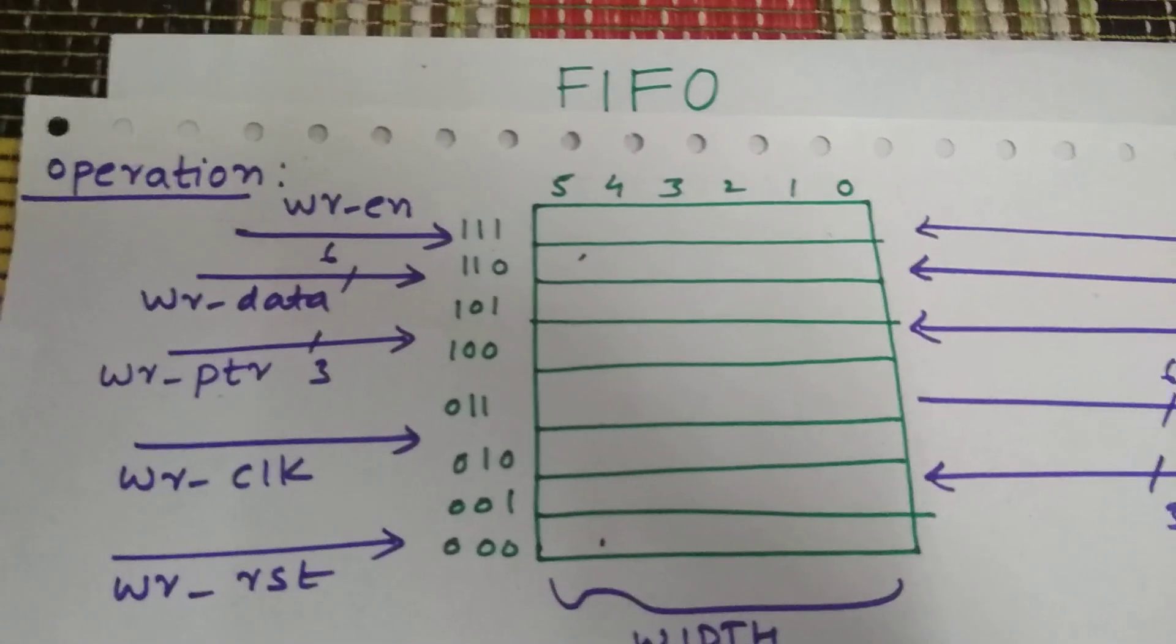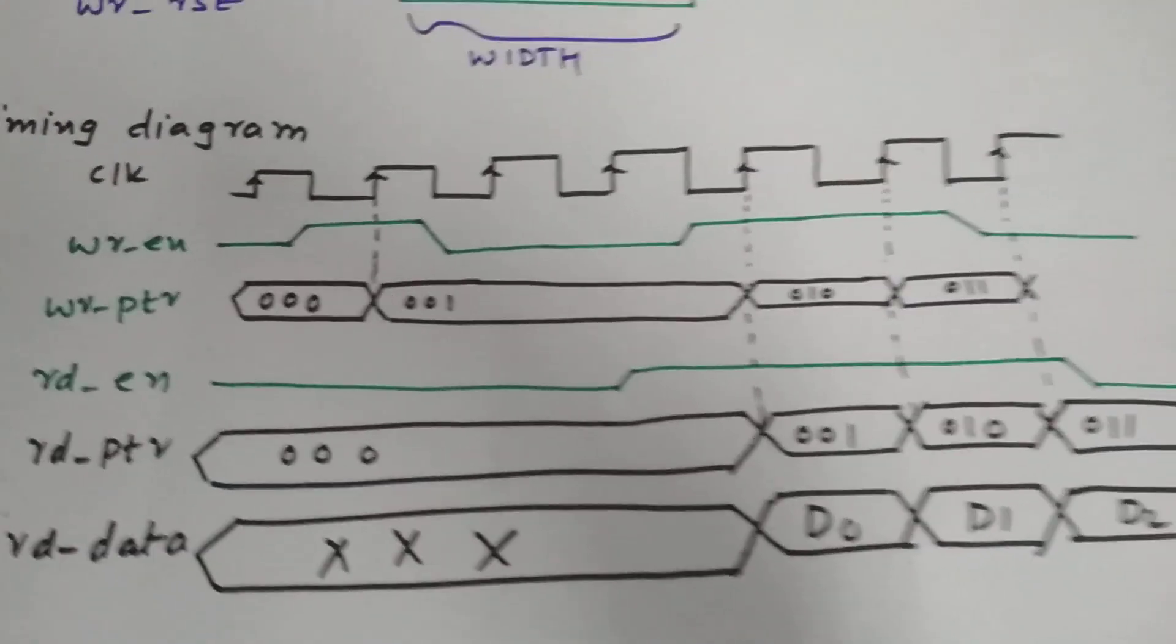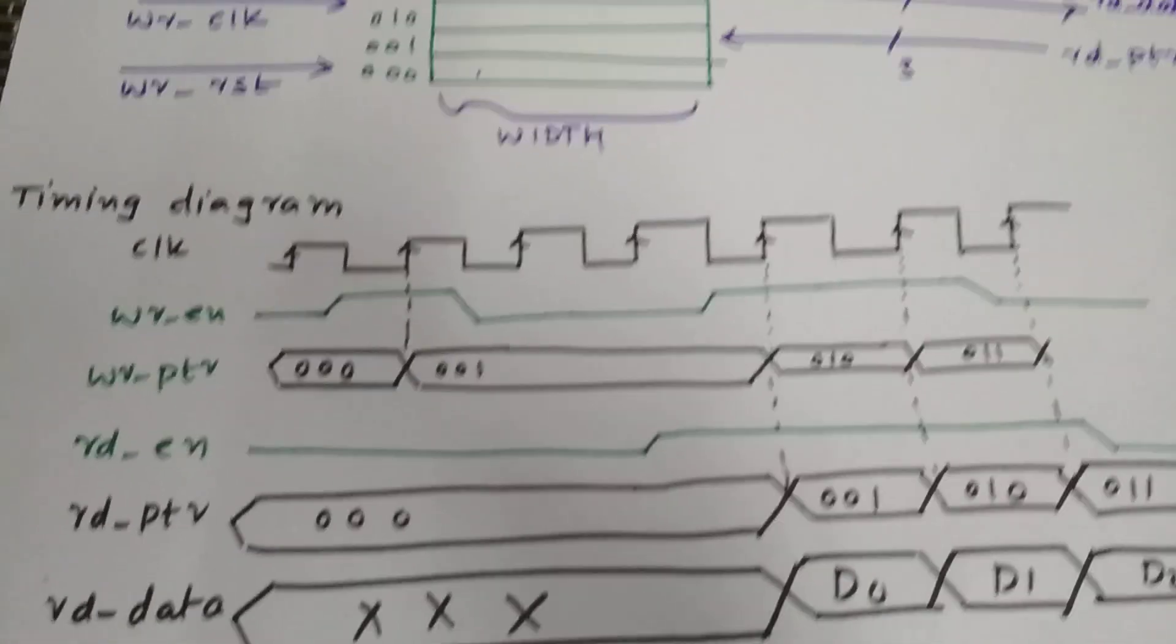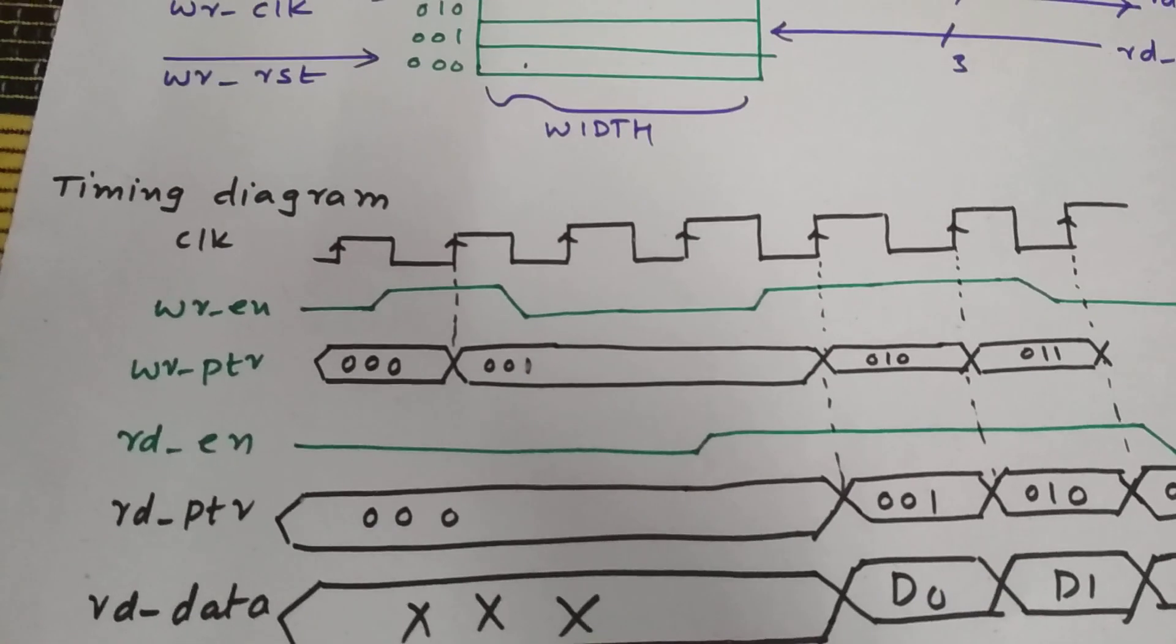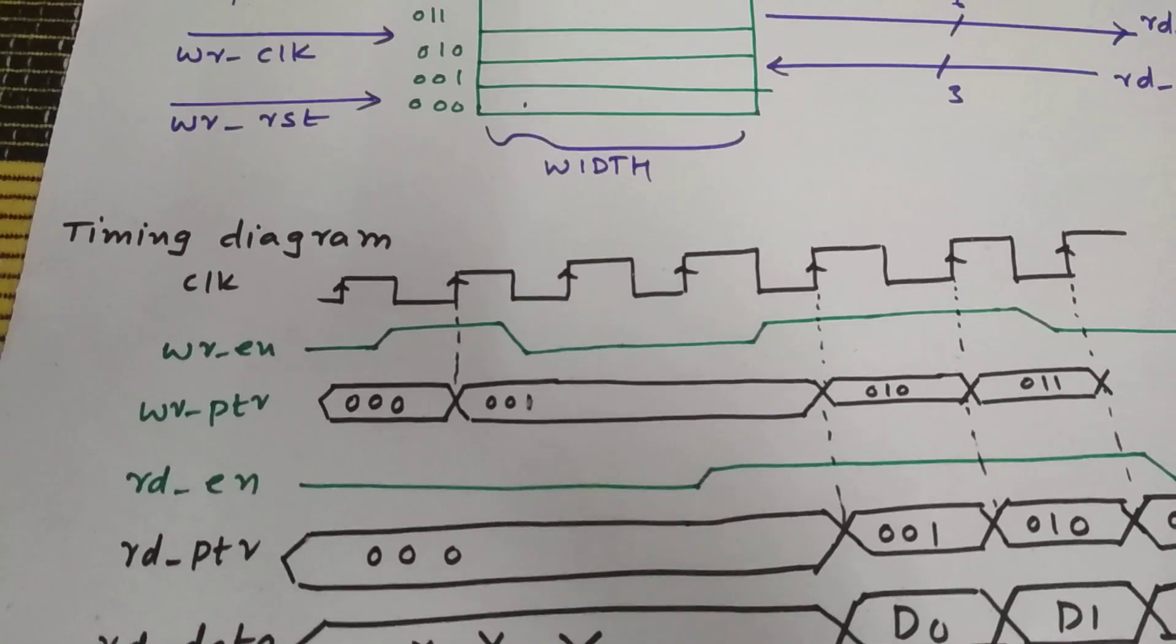So for better understanding of a FIFO, I'm going to deal with the timing diagram, how the clocks and signals will be there. So this is a basic timing diagram for FIFO. As you can see, this is a clock.